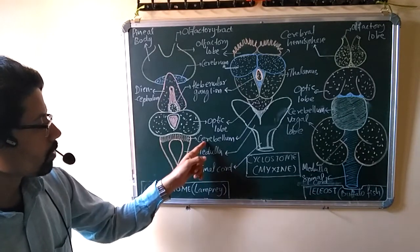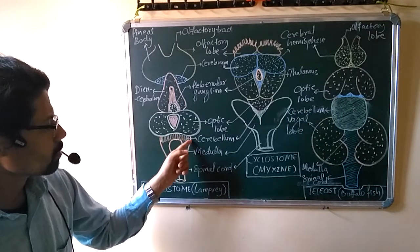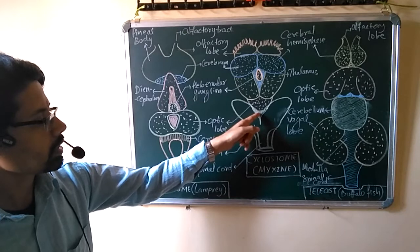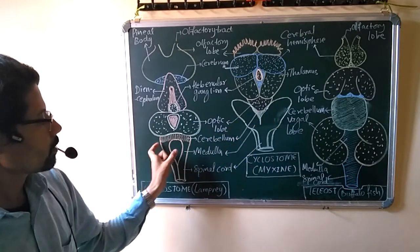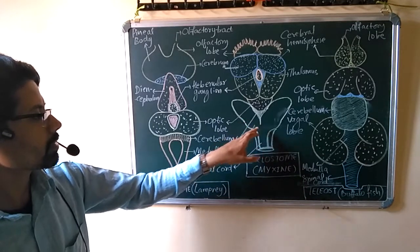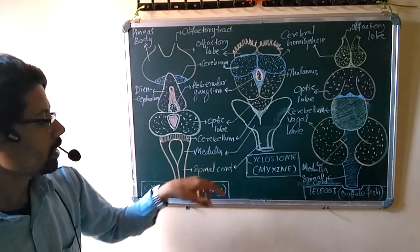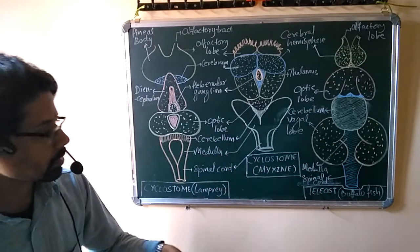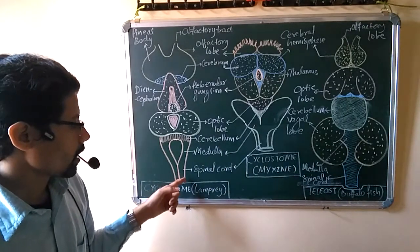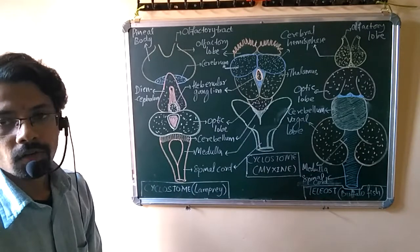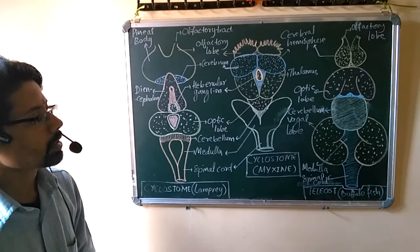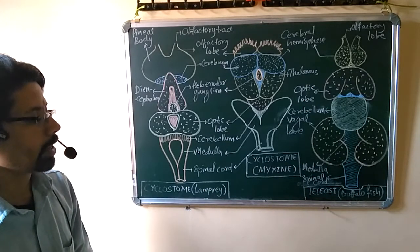Regarding the cerebellum, there is a quite small band of cerebellum in lamprey, and it is further smaller in myxine. The structure called medulla oblongata exists in both of them. It is a triangular structure present in all vertebrates, mostly similar across vertebrates, and it continues as the spinal cord.